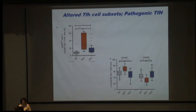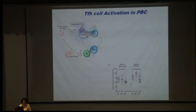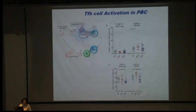T-FH activation in PBC is driven through ICOS — a co-stimulatory molecule — and ICOS-positive T-FH cells were markedly increased in PBC but decreased in PSC. OX40, another co-stimulatory marker, was also increased in PBC.